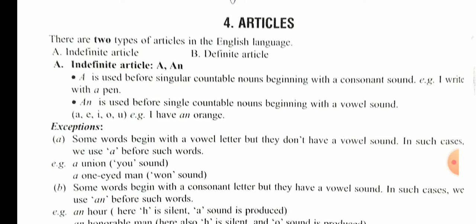Articles के बारे में पहले भी पढ़ा होगा कि there are two types of articles. एक होता है indefinite जिसके अंदर हम a और an को use करते हैं। दूसरा है हमारा definite article जिसके अंदर हमारा word आता है 'the'।